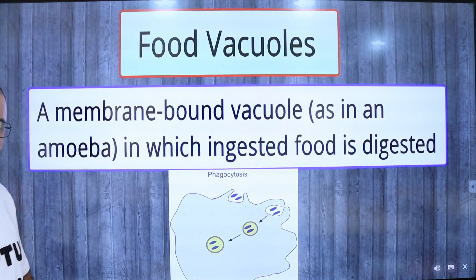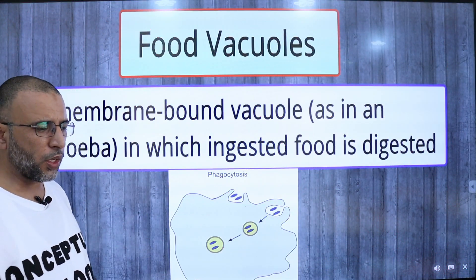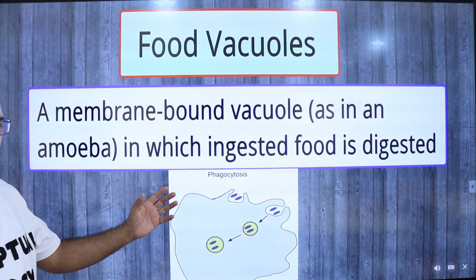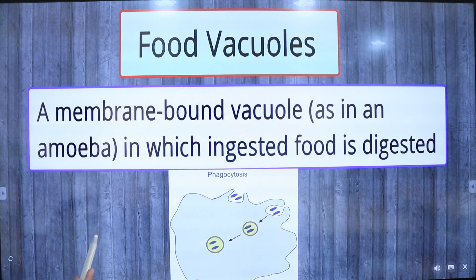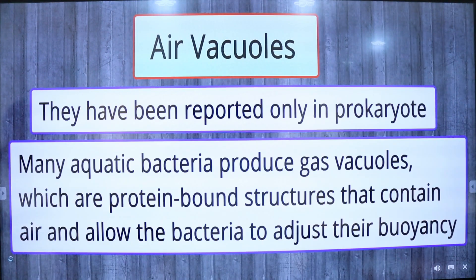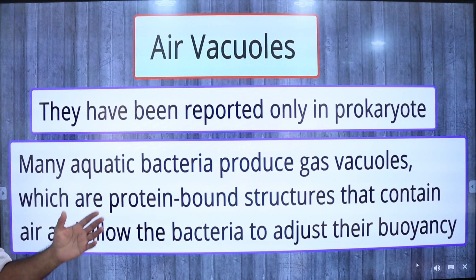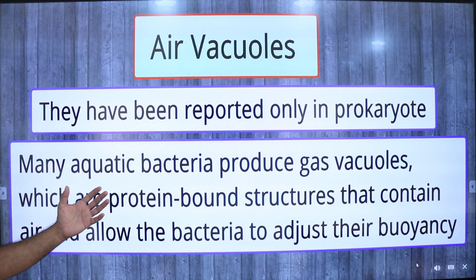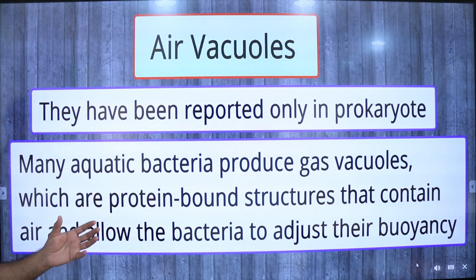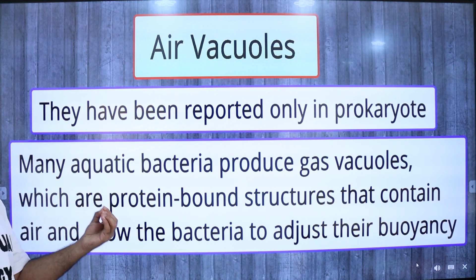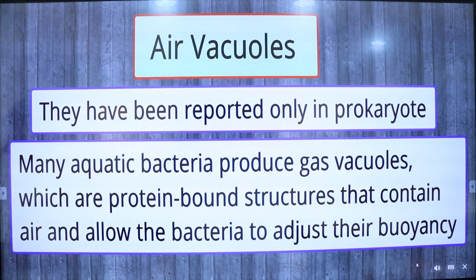A food vacuole is a membrane-bound vacuole — as in the case of amoeba — in which ingested food is digested. Next are air vacuoles, which have been reported only in prokaryotes. Many aquatic bacteria produce gas vacuoles, which are protein-bound structures that contain air and allow the bacteria to adjust their buoyancy.